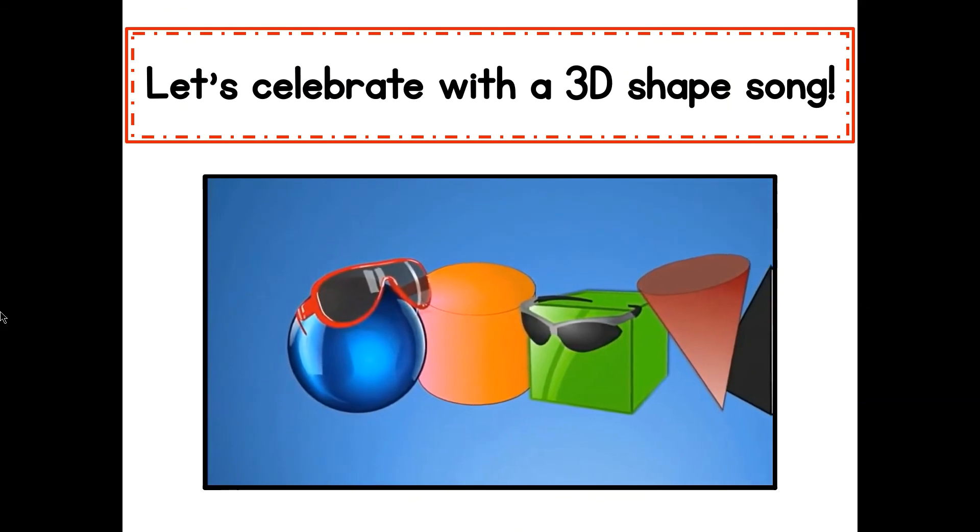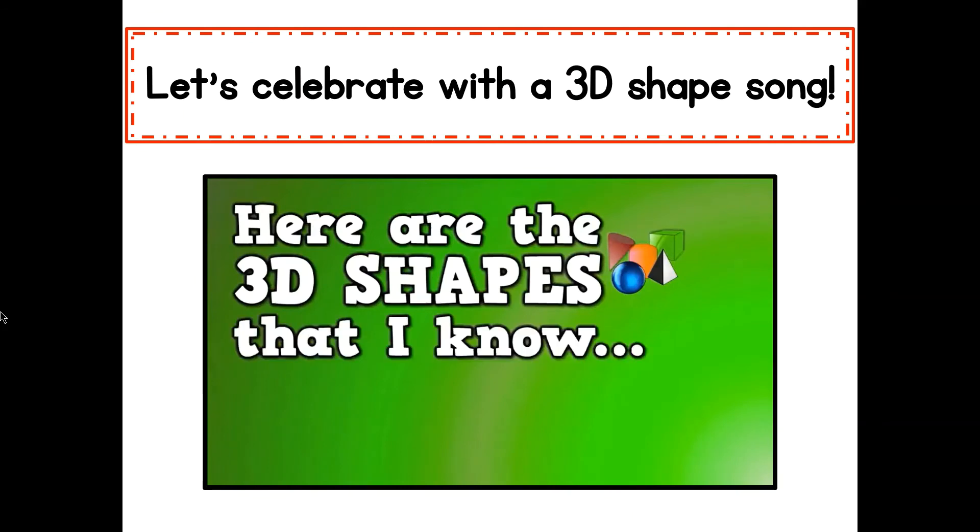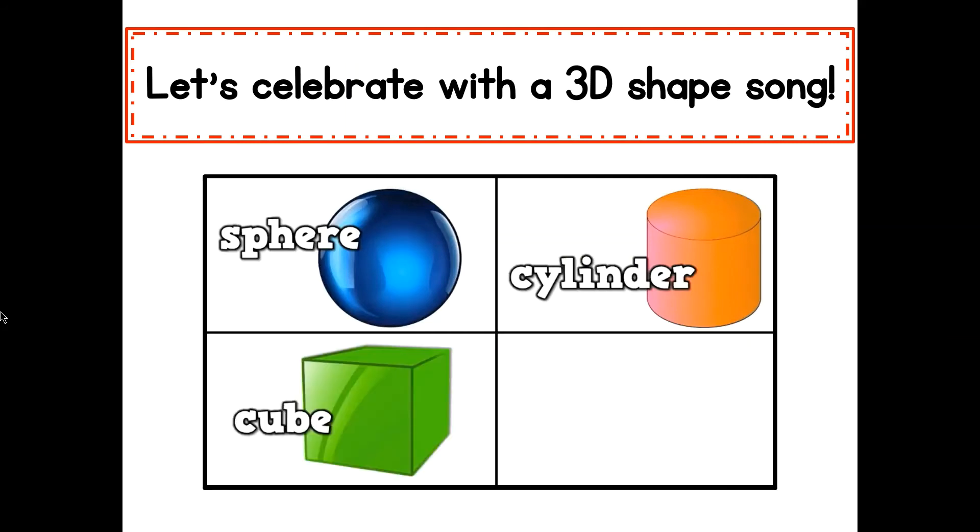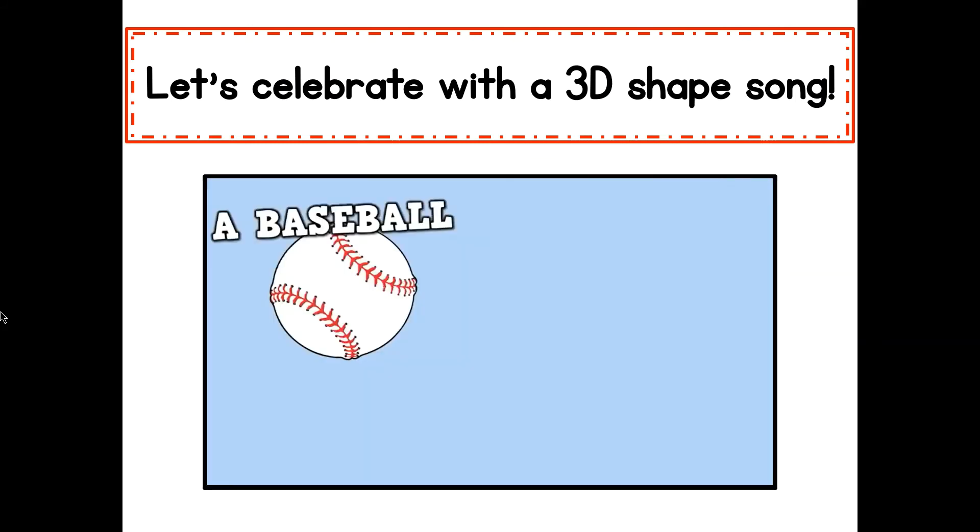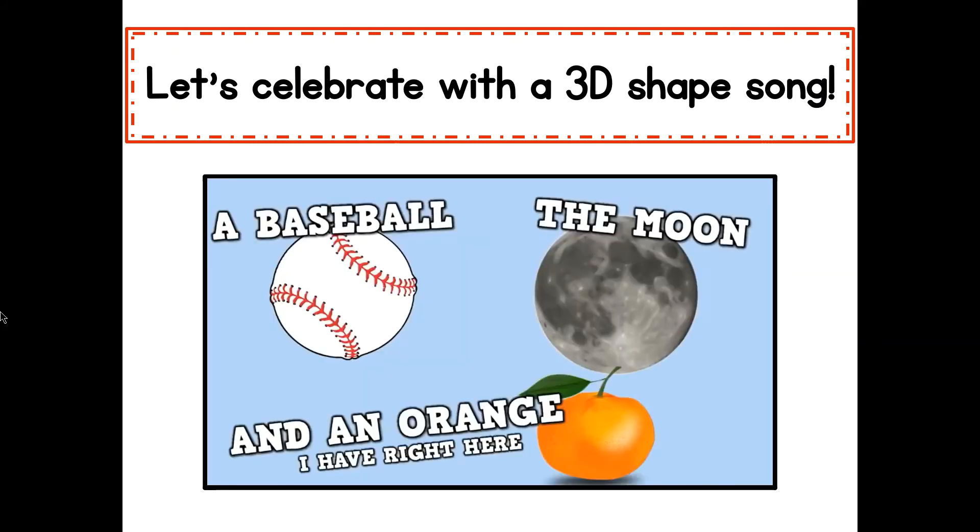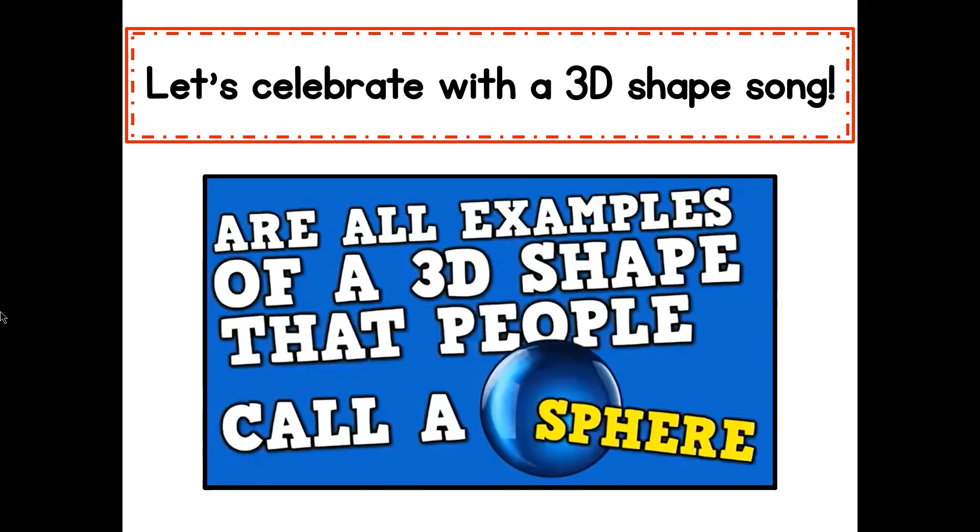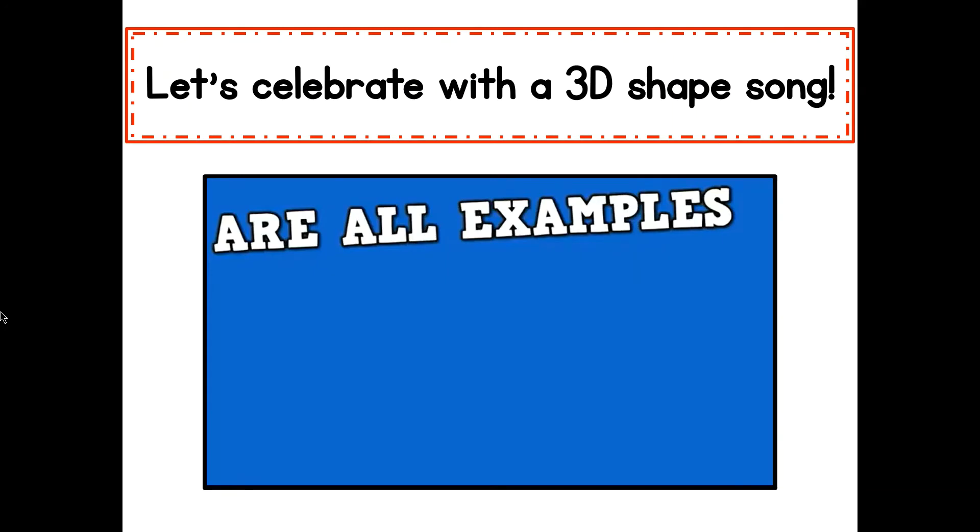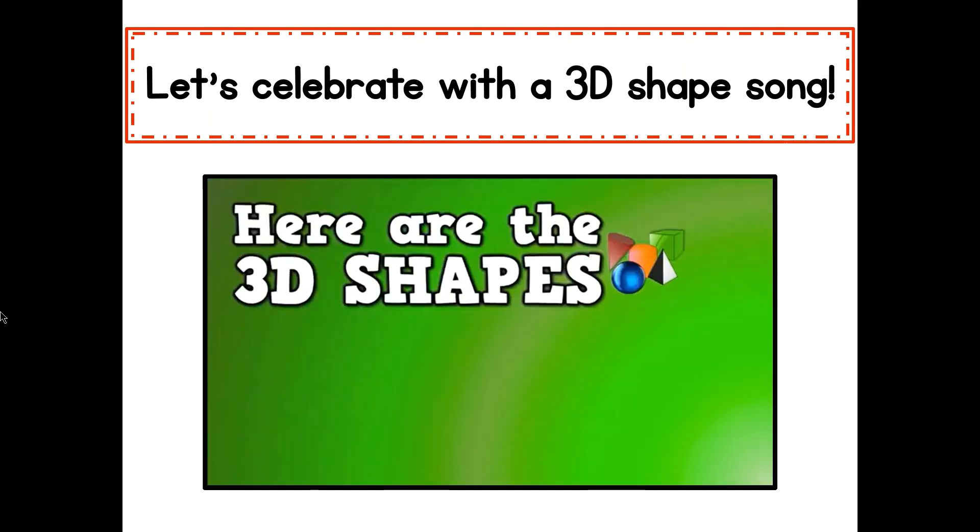I'm a 3D shape expert. Here are the 3D shapes that I know. A sphere, a cylinder, a cube, and a cone. A baseball, the moon, and an orange I have right here are all examples of a 3D shape that people call a sphere. A basketball, the earth, and marbles I have here are all examples of a 3D shape that people call a sphere.